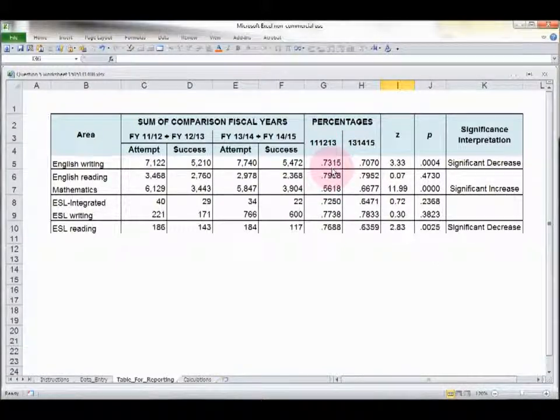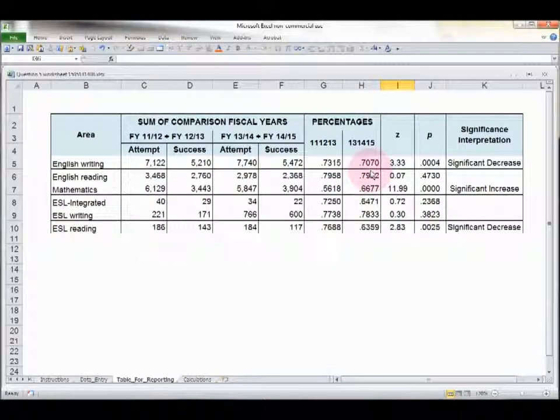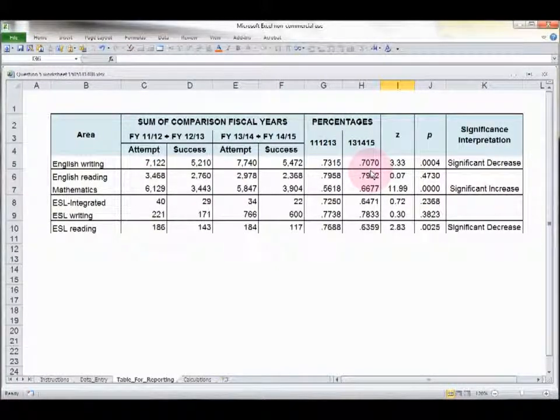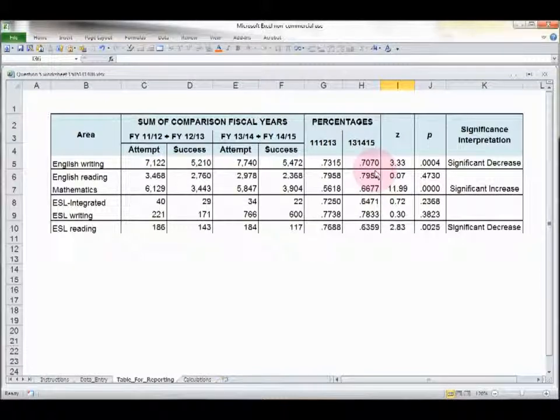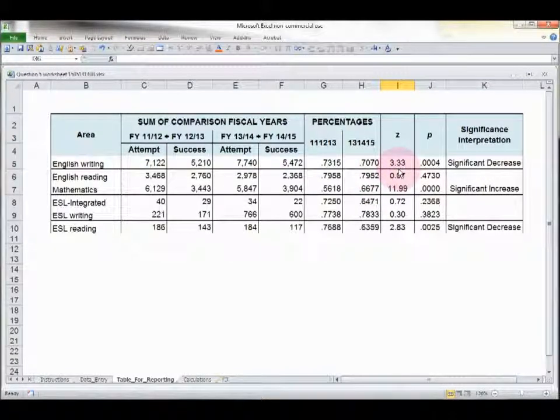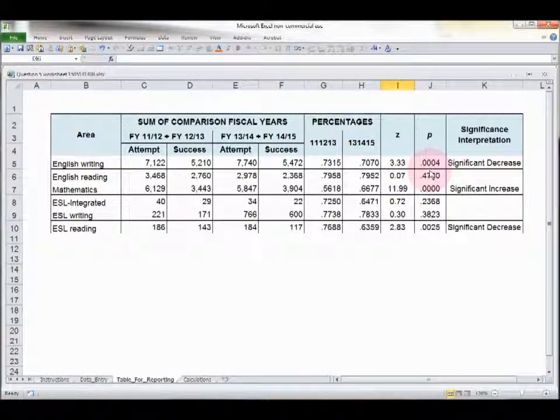11-12-13, about 73% of the students passed English Writing. More recently, 13-14-15, it's gone down to about 70%. But we want to know if this is a significant difference. We don't want to guess. That's why we're going to use z-scores, and these are actually built in automatically for you. This is a z-score test of two parameters. It's done automatically. You can see the score is 3.33. And the p-value also calculated automatically for you is .0004.